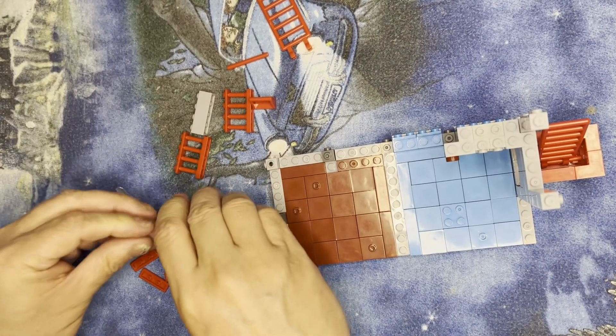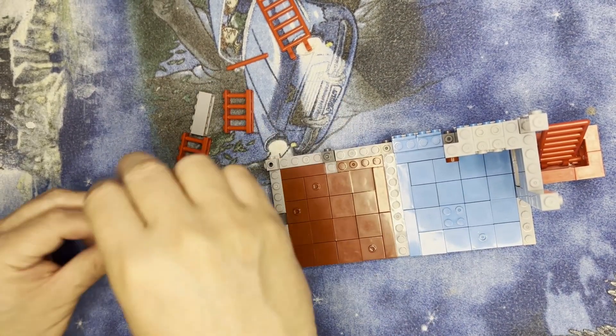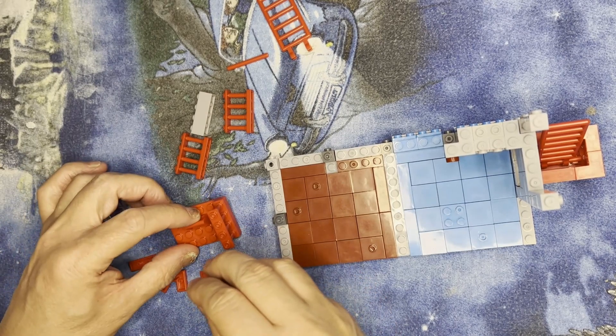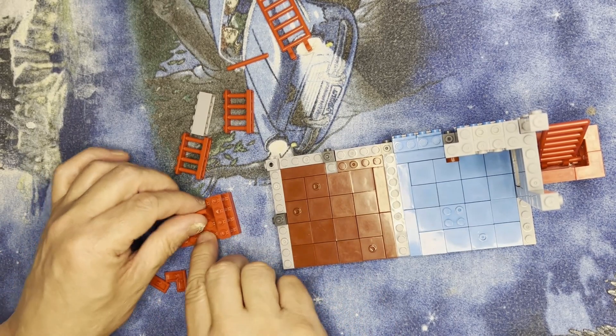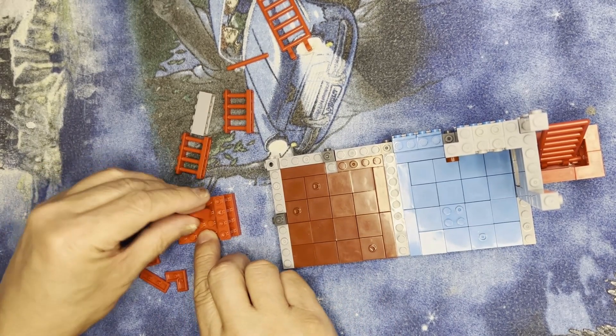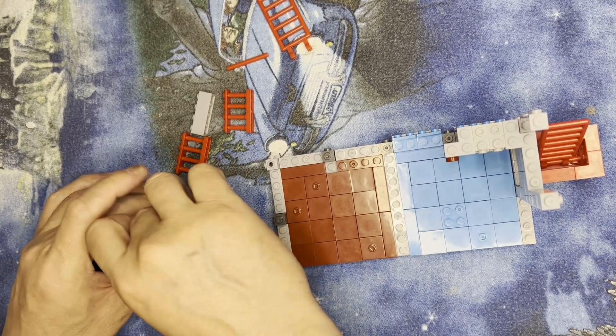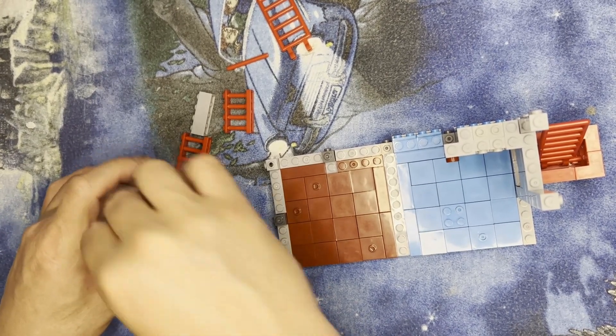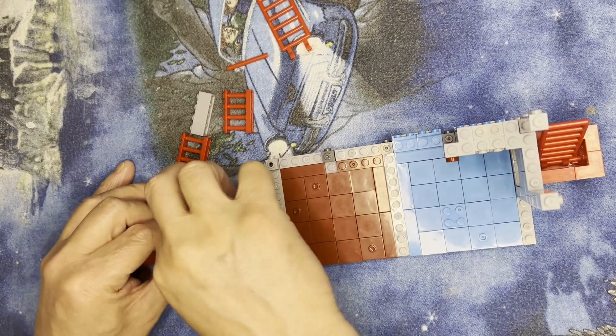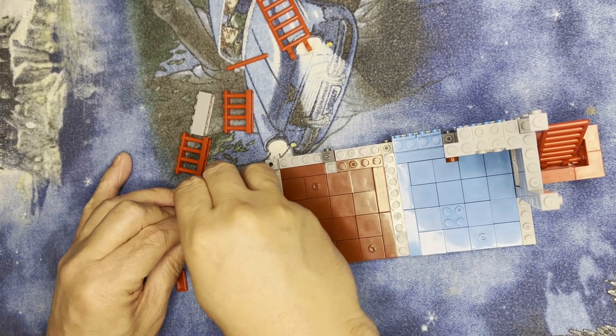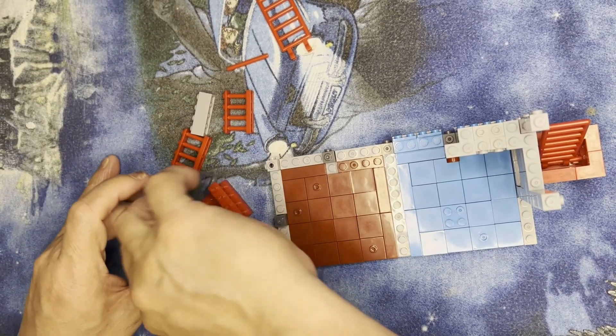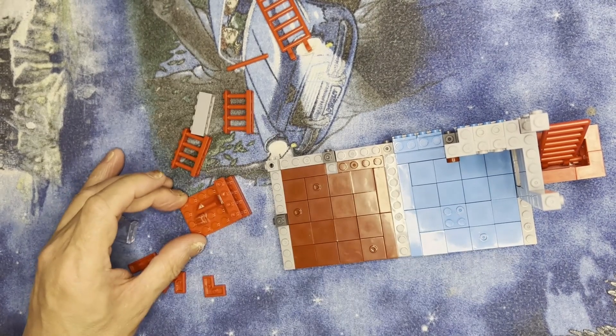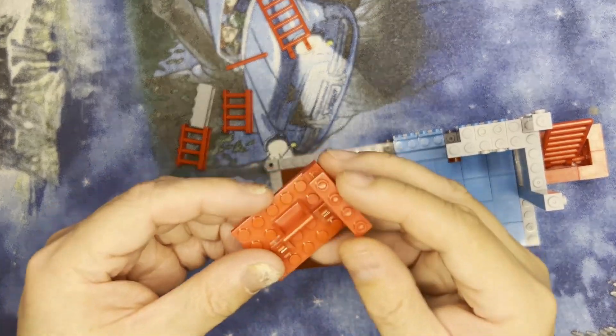Just like that. This goes here like that. Nope, backwards. This goes—and this goes here, just like that. Alright, that's how that's going to look.